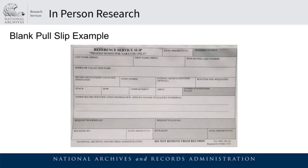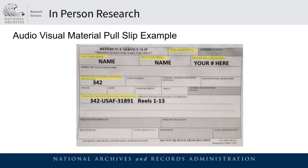We're not going to discuss pull times and material limits today because they may change post-pandemic. The basics of a pull slip should not change — you will need to fill in your first and last name, researcher number, and the item's local identifier and reel numbers if known. This example demonstrates how you would ask for an AV item, which could be served to you as film, U-matic, VHS, or DVD. It is possible that one item has multiple reels and will take up your entire pull limit.